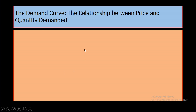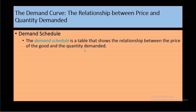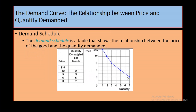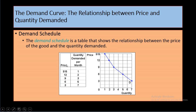Now let us understand the demand schedule. A demand schedule is a tabular relationship between price and quantity demanded. When price was 15, demand was only 1. As per the law of demand, when price decreases, demand increases — so when price decreases from 15 to 12, demand increases from 1 to 2. Again when price decreases to 3, demand rises to 7. This negative relationship expressed in table form is called a demand schedule.